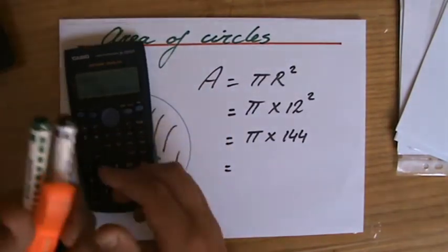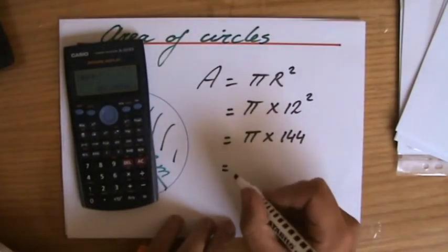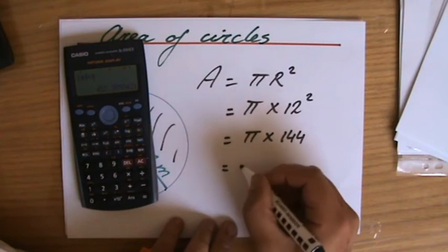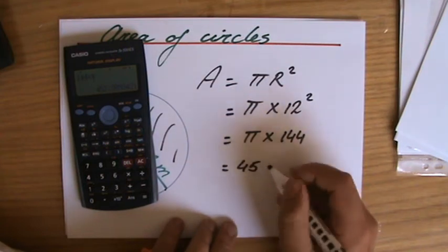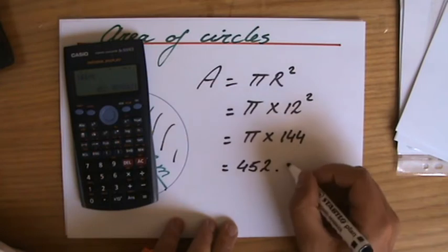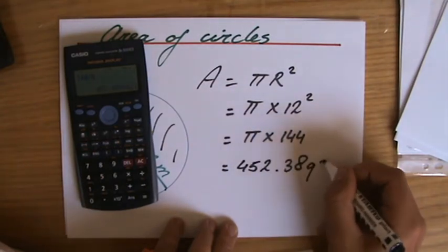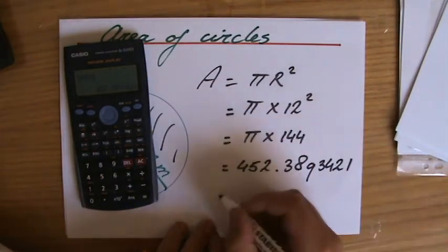And of course I'm getting all these decimals, because a perfect circle actually doesn't exist. But okay, that's something for later. 452.3893421.